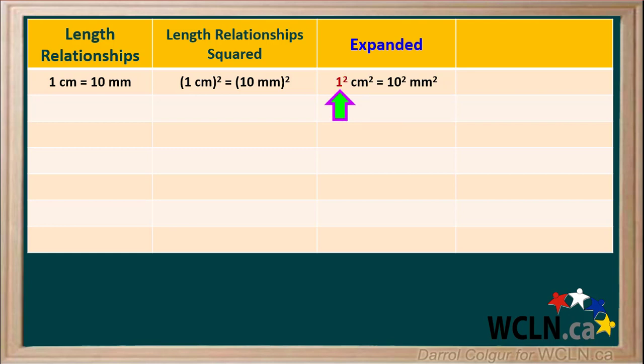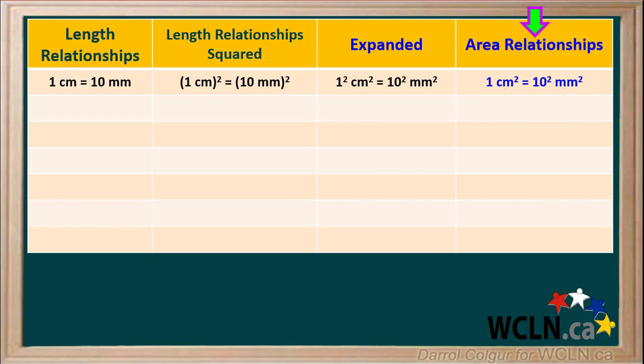One squared is just equal to one. So in the last column, we'll write one centimeter squared equals ten squared millimeters squared. This now gives us the relationship between the two area units, centimeters squared and millimeters squared. We'll call column four area relationships.